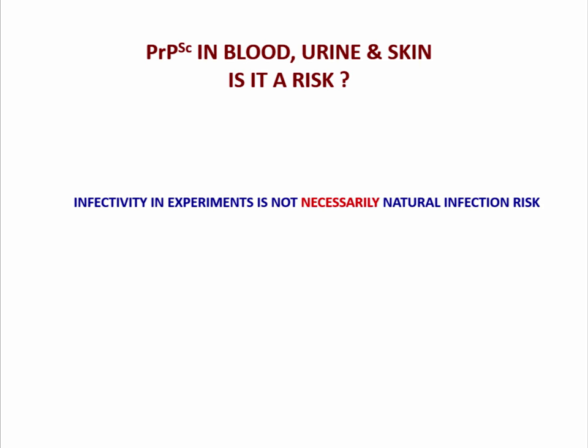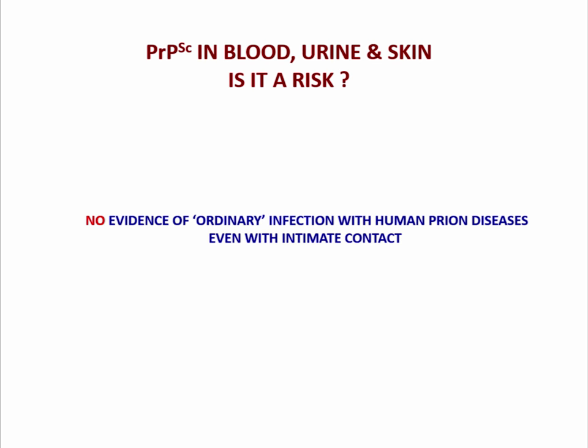Infectivity in laboratory experiments showing you can transmit diseases is not necessarily a natural infection risk. In real-world human infection there are complications like the actual dose of the infectious matter, the route by which it's transmitted, and the person's genetic make-up. There is no evidence, despite a lot of study over a long time, of ordinary infection with human prion diseases, even with intimate human contact.